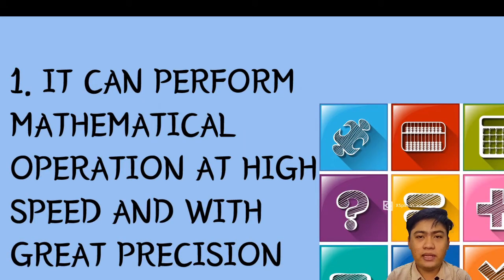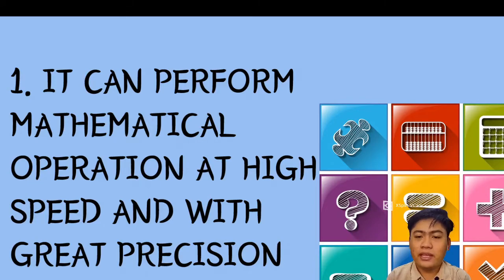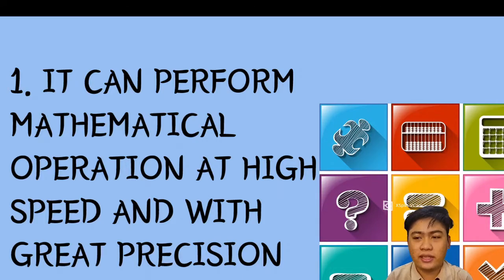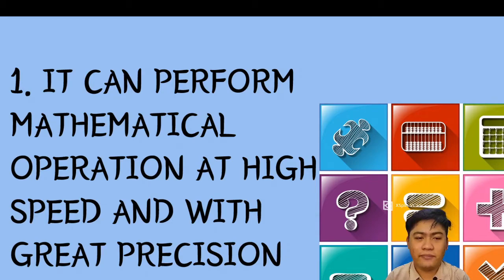The first capability of a computer is that it can perform mathematical operations at high speed and with great precision. The computer calculates numbers and values faster and accurately, and it performs self-checking to keep the integrity of data.